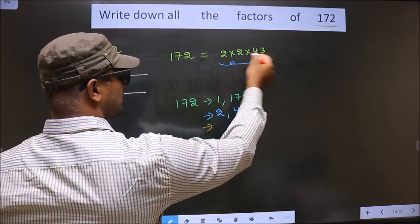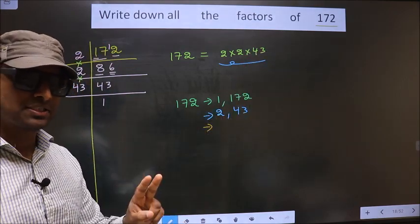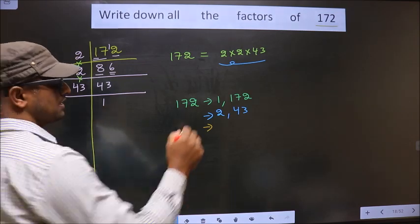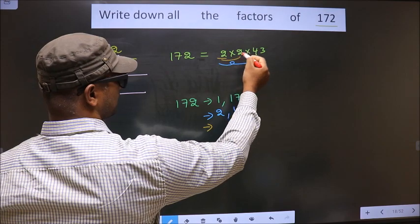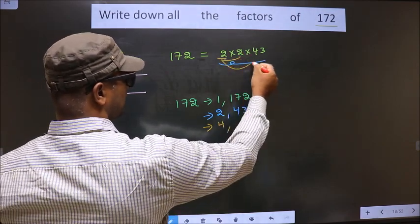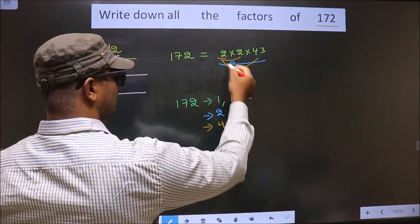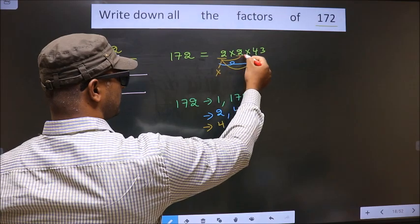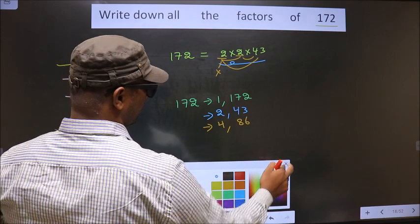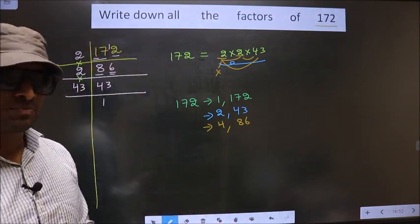Next. Now, from these numbers, now you select a combination of two numbers. How do we do that? See. First, I fix 2. I combine with 2, I get 4. Now, 2 combine with 43. So, 2 into 43 is 86. Now, you leave this 2, fix this 2, combine with 43, we get 86 only. Thus, no more combinations possible.